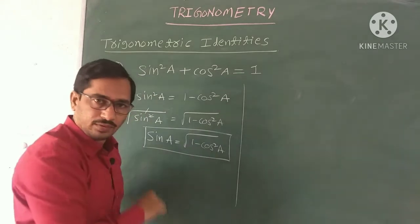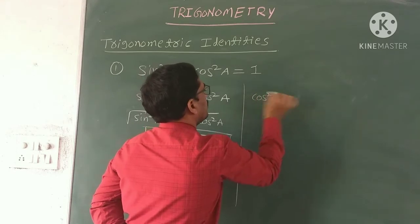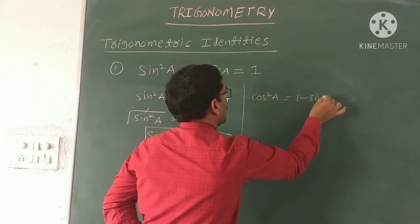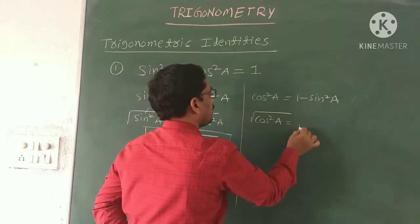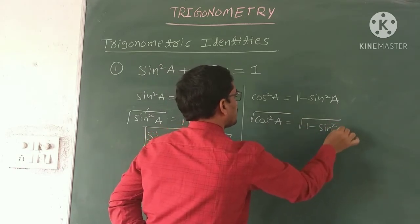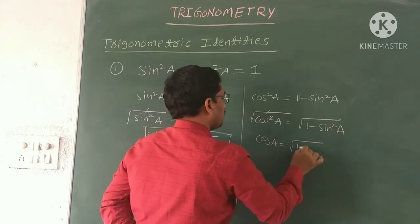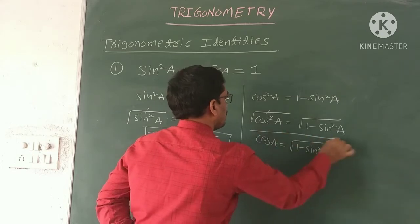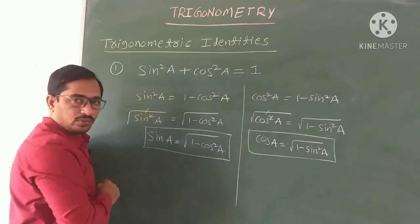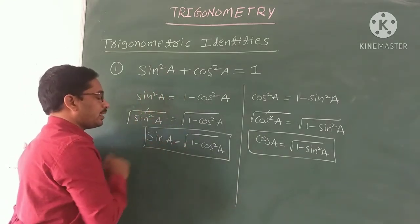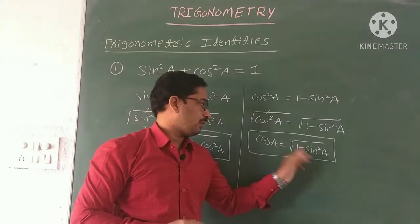In the same way, express cos in terms of sin. Transposing sin²A to the right side: cos²A = 1 - sin²A. Applying square root on both sides: cos A = √(1 - sin²A). So the main identity to remember is sin²A + cos²A = 1, from which sin A = √(1 - cos²A) and cos A = √(1 - sin²A).